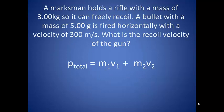If we look at this in the context of a marksman holding a rifle with a mass of 3.00 kilograms so it can freely recoil, it is firing a bullet with a mass of 5.00 grams horizontally with a velocity of 300 meters per second. What is the recoil velocity of the gun?